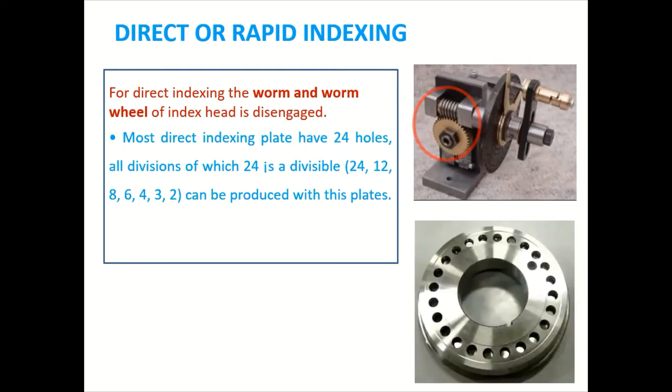So this is a plate which having 24 holes. Direct indexing is used for milling a square or a hexagonal nut and bolts on the milling machine.